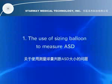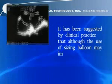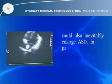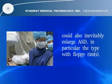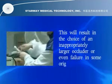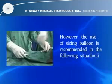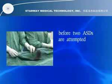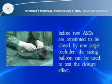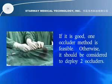Regarding sizing balloons for measuring ASD: Clinical practice suggests that although sizing balloons may improve accuracy in measuring ASD diameter, they can also inadvertently enlarge the ASD, particularly in defects with floppy rims. This may result in selection of an inappropriately larger occluder or even failure in originally curable cases. Sizing balloons are recommended when two ASDs are to be closed by one larger occluder — the balloon can test the closure effect. If good, one occluder is feasible; otherwise, two occluders should be considered.